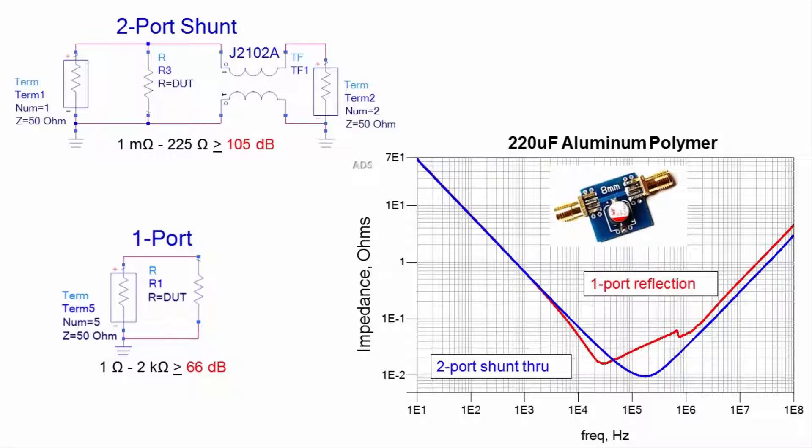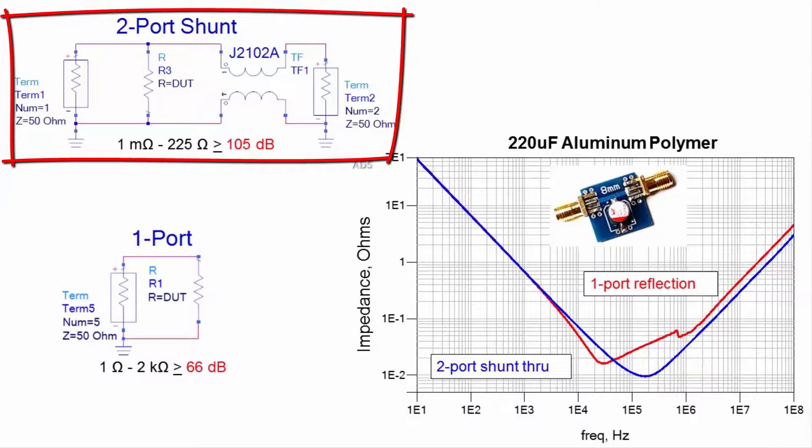Fortunately, a simple VNA measurement yields accurate results that can be used to create these simulation models. The two-port shunt through method offers more than 100 dB dynamic range and can measure very low impedance values, making it the best choice for measuring power components.